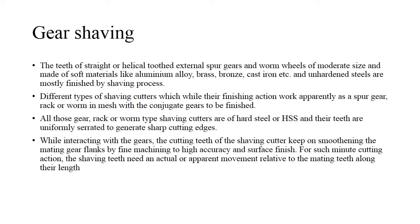First, we'll see what gear shaving is. As the name suggests, it is a final finishing process to make sure that the exact dimensions of teeth are achieved. Teeth of straight or helical tooth external spur gears or worm wheels of moderate size, made up of soft materials like aluminium, brass, bronze, or cast iron, are basically finished by the shaving process. There are different types of shaving cutters, and how they work is basically as a pair of spur gear, rack, or worm — they conjugate or mesh with the gear to ensure accurate dimensions are achieved.